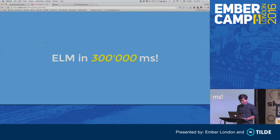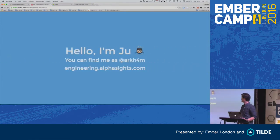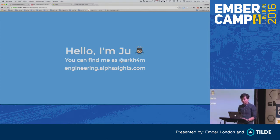I have 300,000 milliseconds so I have to be quick. My name's Jew. You can find me online at Zarkam with F4. I work for a company here in London called AlphaSight — you should check them out.